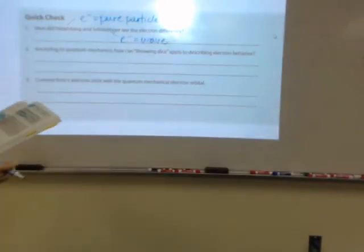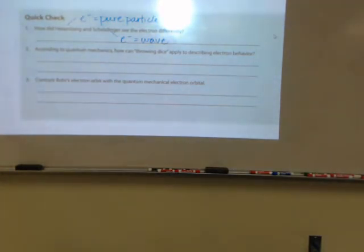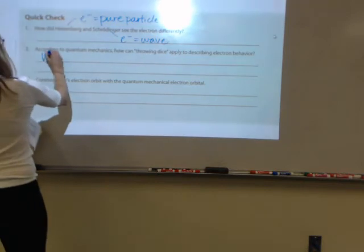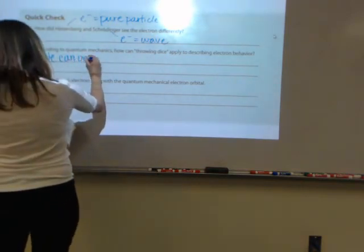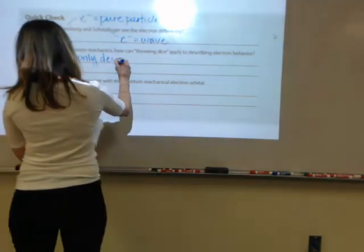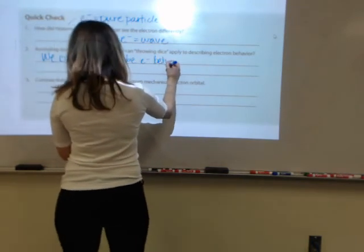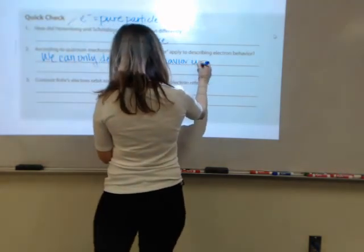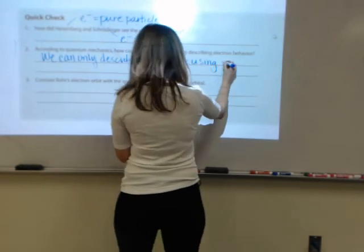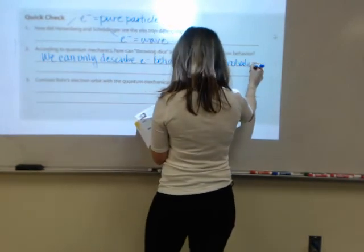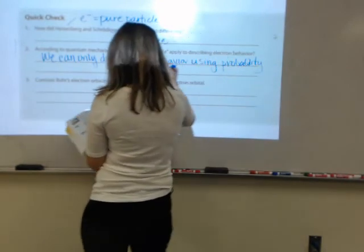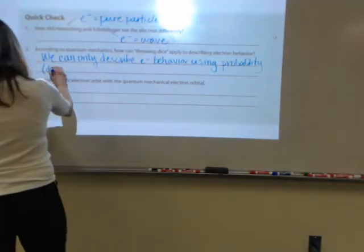Number two, according to quantum mechanics how can throwing dice apply to describing electron behavior? Well we can only describe electron behavior using probability and this is described by Schrodinger's wave equation.